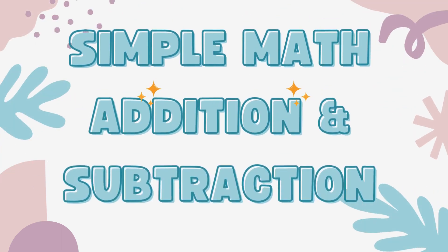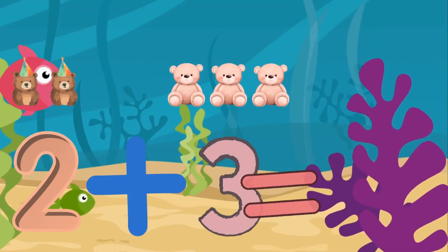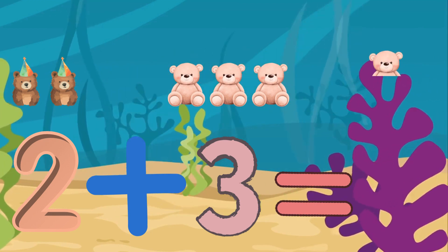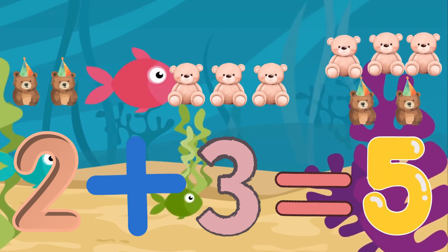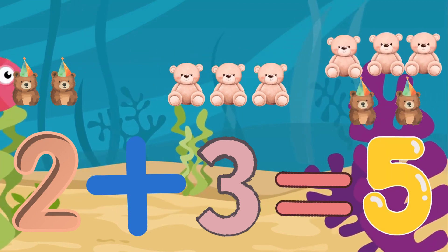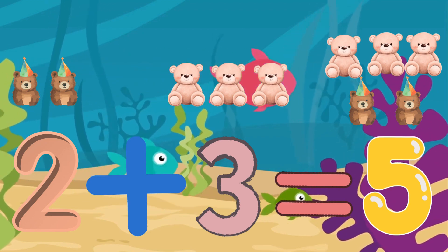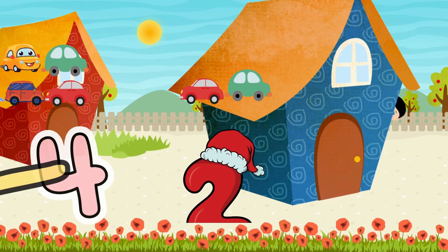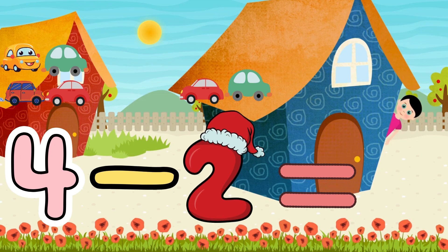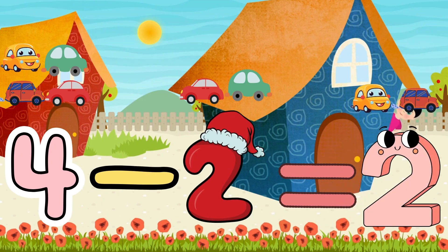Simple math: addition and subtraction. 2 plus 3 equals 5. 2 teddy bears plus 3 teddy bears equals 5 teddy bears. 4 minus 2 equals 2.